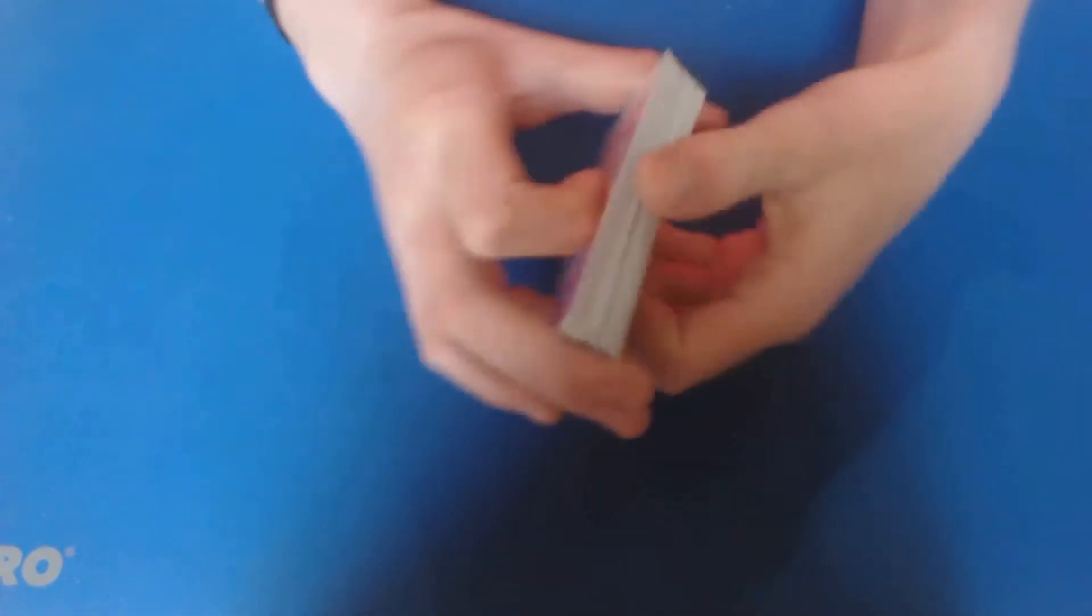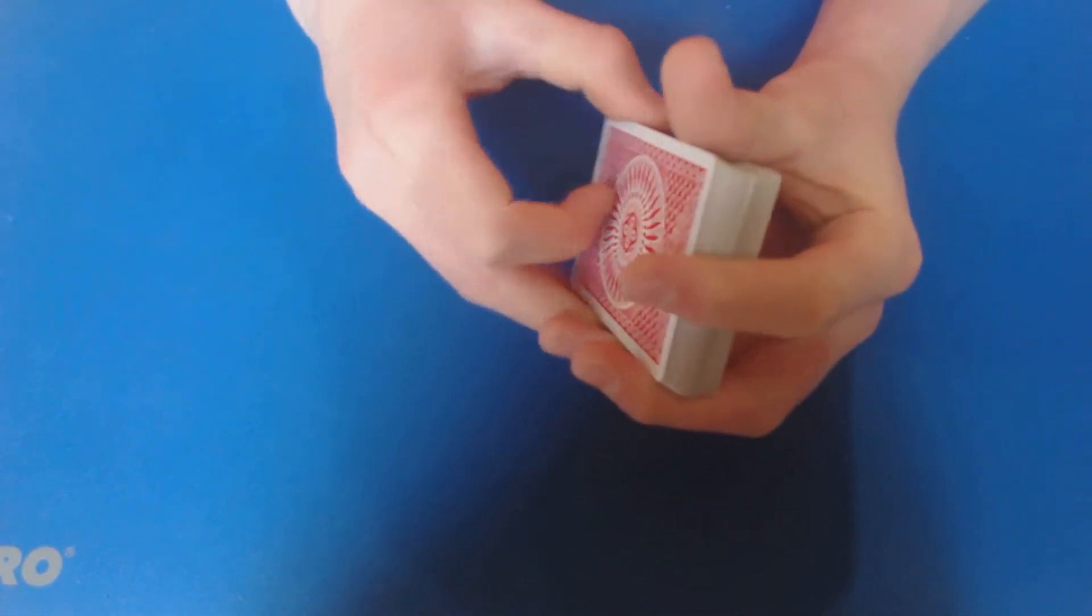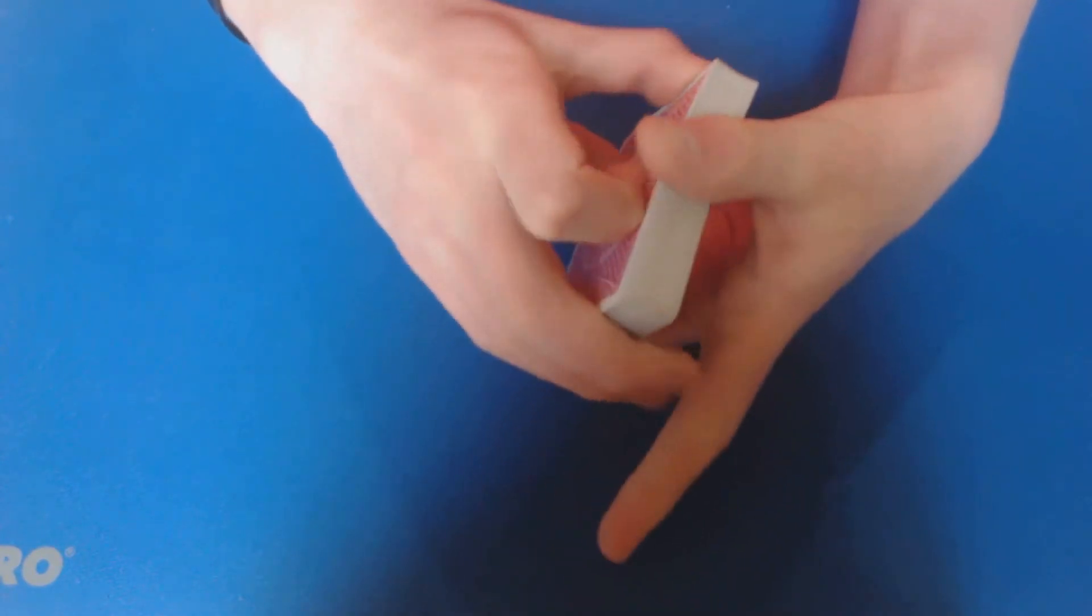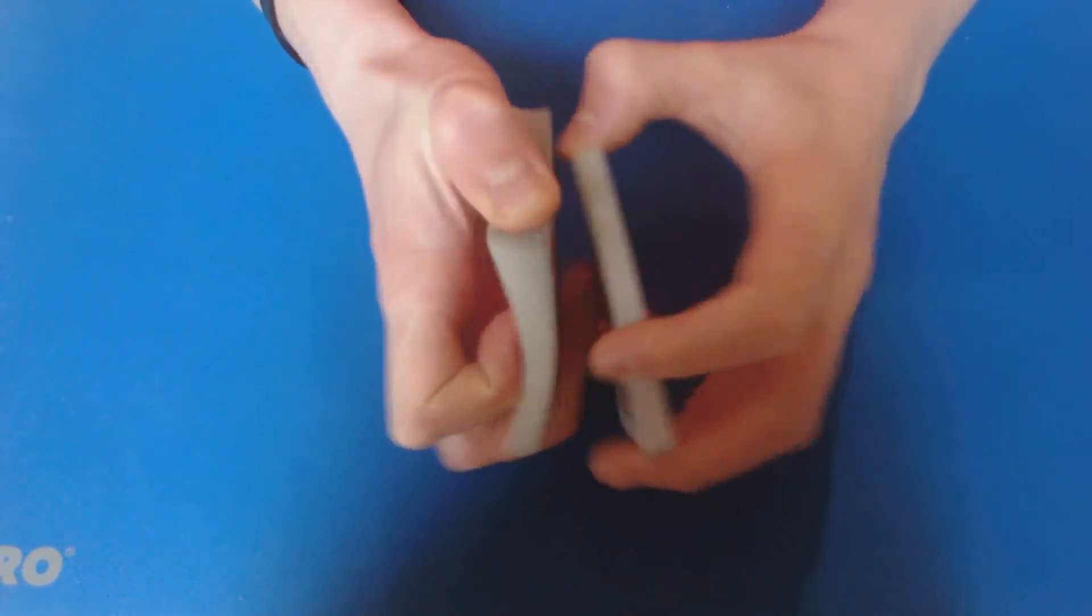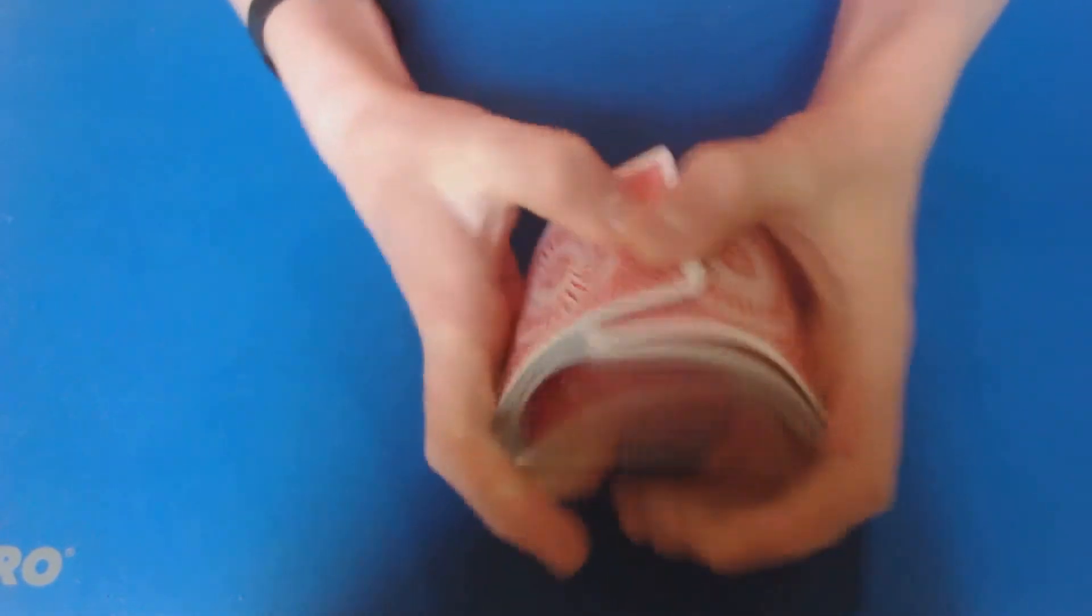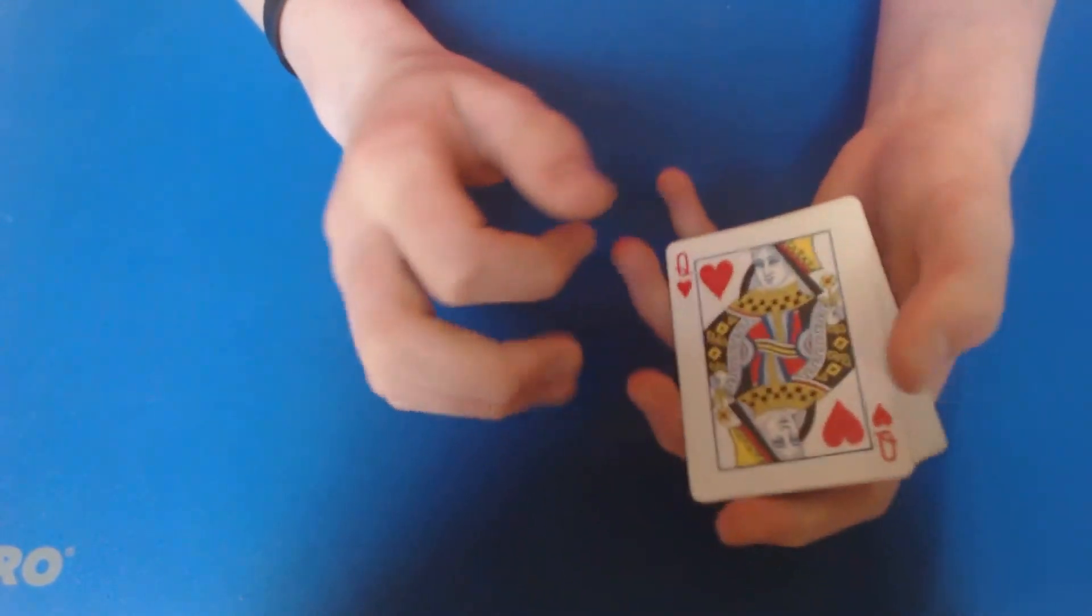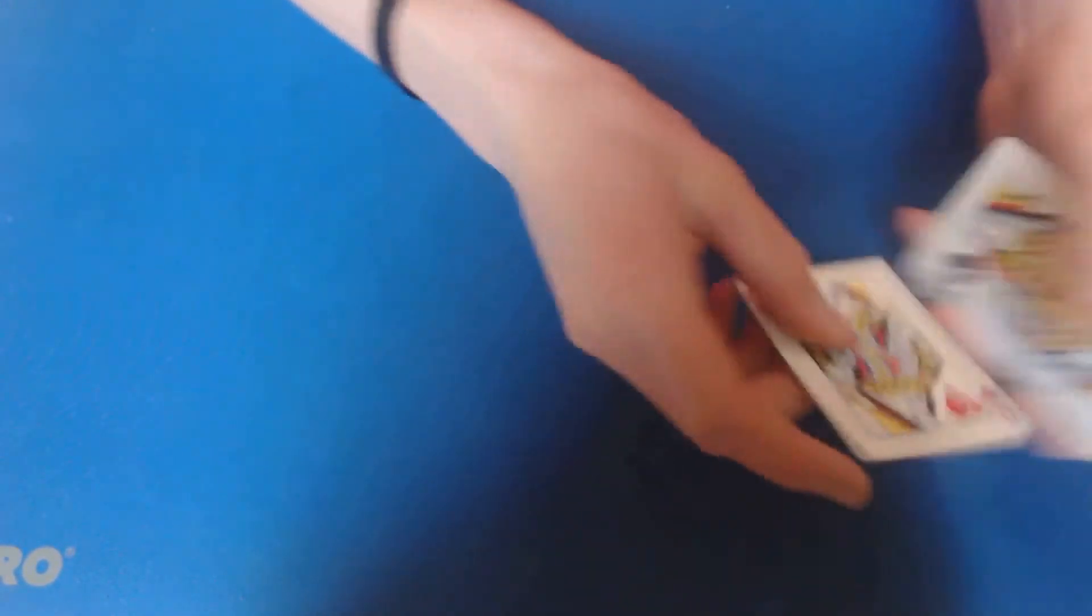And then it's right there. So go ahead and ask them, you could even do a false cut if you wanted. I would recommend doing it, it helps out a lot. You could also shuffle the deck, maintaining the top two cards. Just keep that card second to the top.